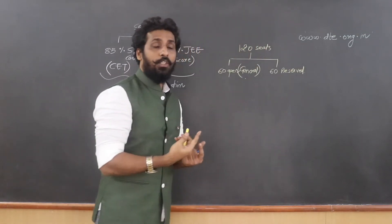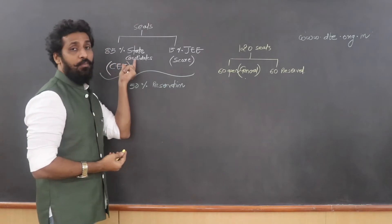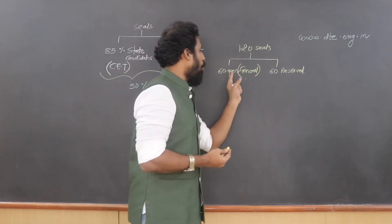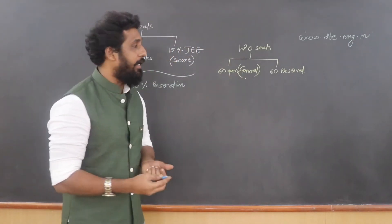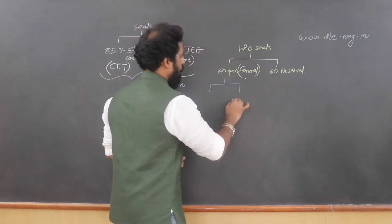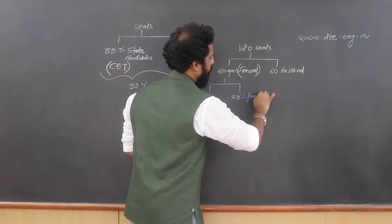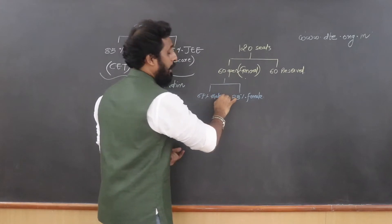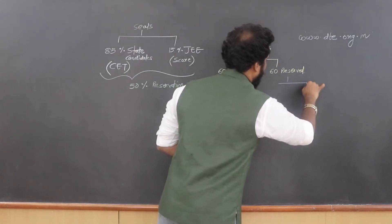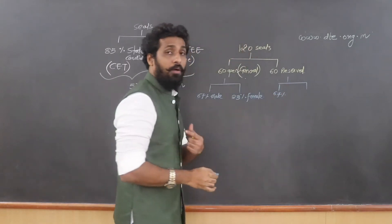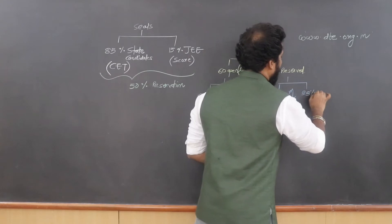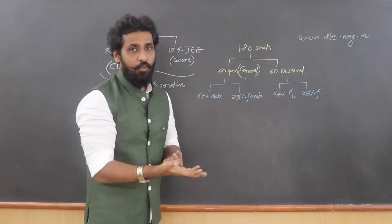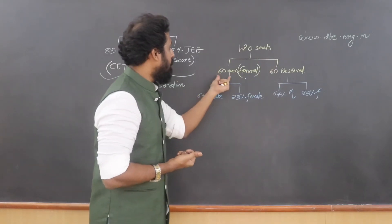From those 60 open seats, 33% will be reserved for female candidates and the remaining 67% for male candidates. The exact same split applies to the reserved category seats. So there is no additional 33% reservation for females — it is segregated from the existing 50% open and 50% reserved category seats.